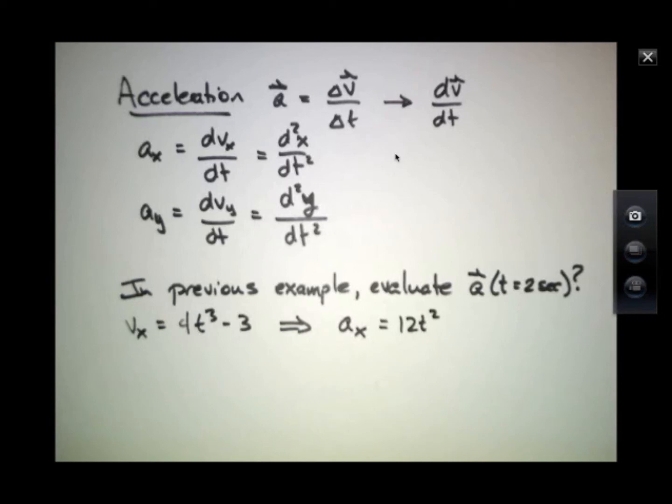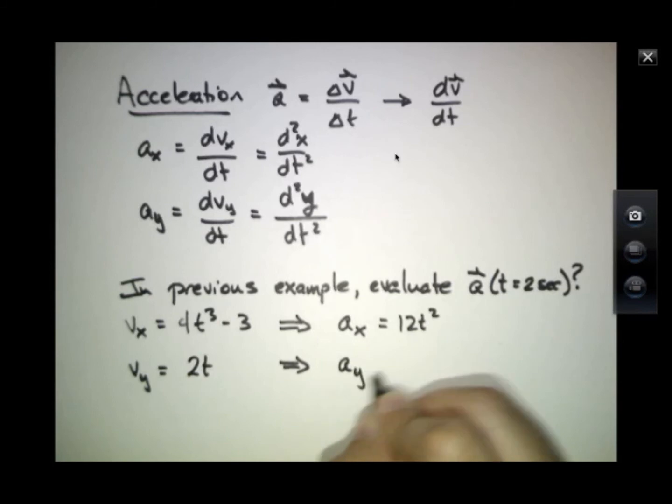and v_y we found was 2t, and therefore, a_y had a value of 2. It's a constant.